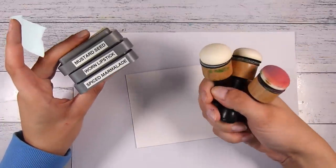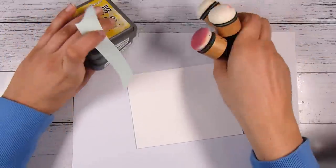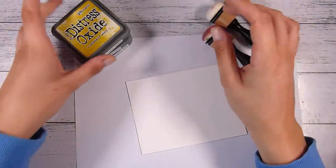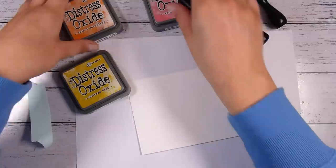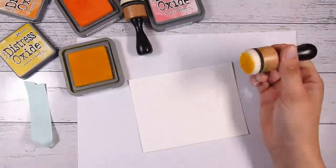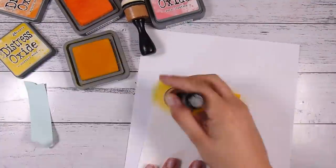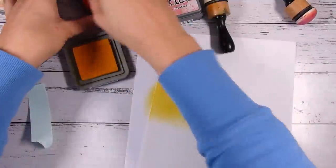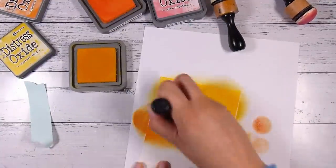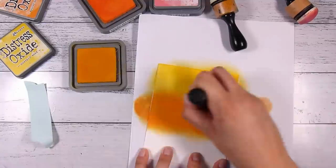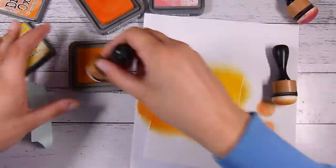If you wanted to, there is another way. You could just do some ink blending. I'm using some Mustard Seed, Worn Lipstick, and Spiced Marmalade. I'm using some distress oxide inks. I'm going to use some domed foam blenders, and I also have a piece of mint tape—that blue low-tack tape—sitting there because I will eventually pop this tacky side up on my fingers so that I don't get my little paw prints all through this gorgeous piece of ink blending.